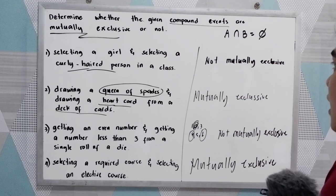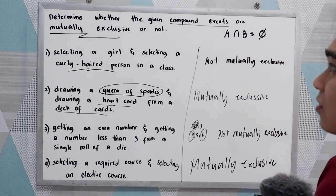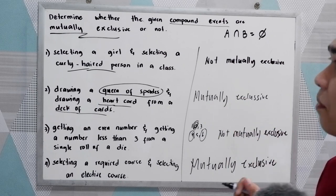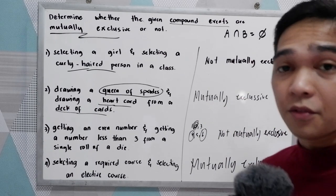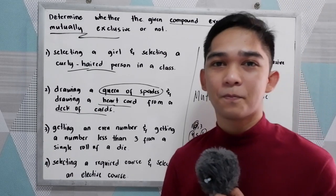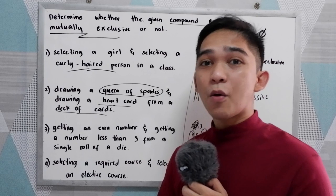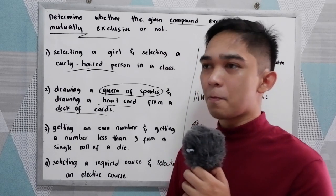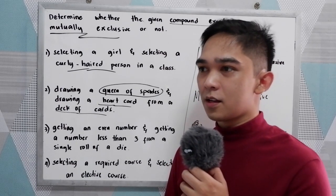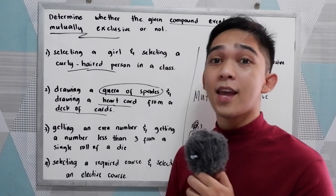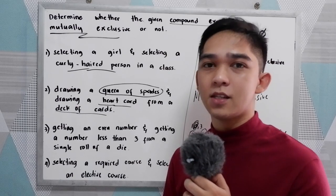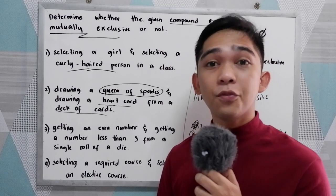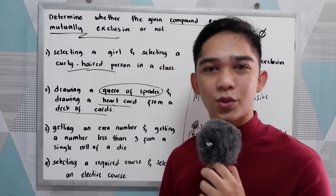So that is how to determine whether a given compound event is mutually exclusive or not. In our next video, we're going to discuss the union of two events A and B and, of course, our rules. Thank you for watching, Senior Pablo TV.